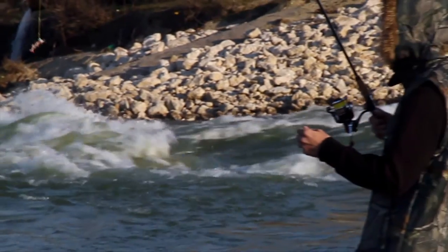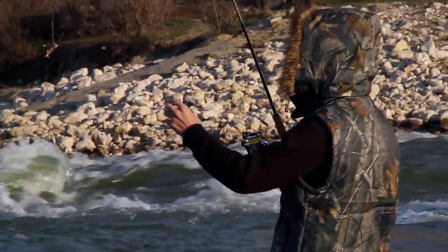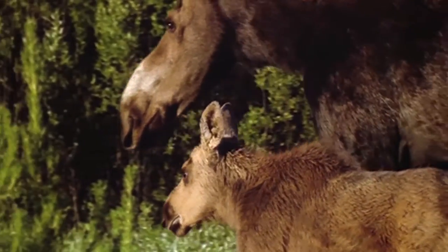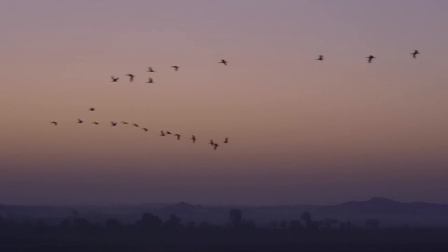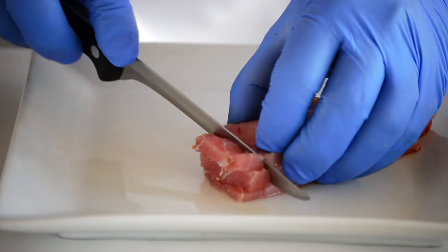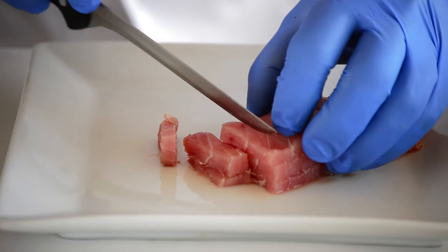For indigenous communities of the Northwest Territories, traditional foods like fish, moose, and geese are both a vital source of nutrition as well as an integral part of culture and heritage. But these foods can also be a pathway of exposure to contaminants like mercury and PCBs.